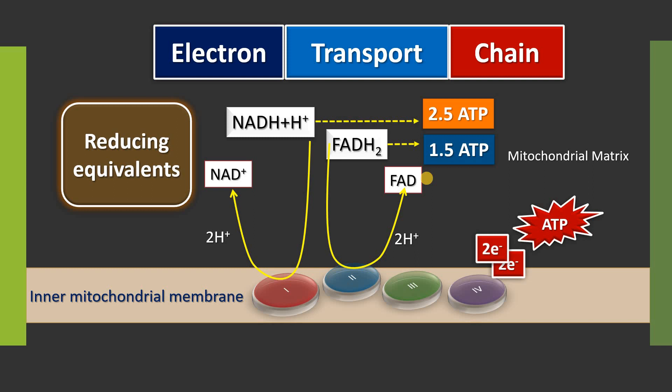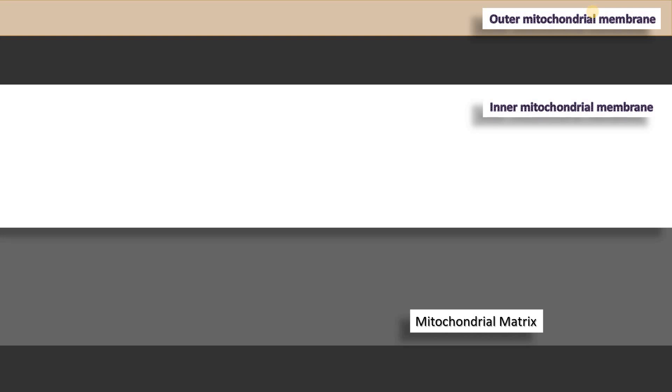Now we will see the exact mechanism or pathway of ETC — the electron transport chain, respiratory chain, or cellular respiration. The components of the electron transport chain are located in the inner mitochondrial membrane, and the production of ATP occurs in the mitochondrial matrix. Mitochondria has two membranes: outer membrane and inner membrane. The space between the outer mitochondrial membrane and inner mitochondrial membrane is called the intermembranous space. This space is very important when we study oxidative phosphorylation, which I will explain in the next video.